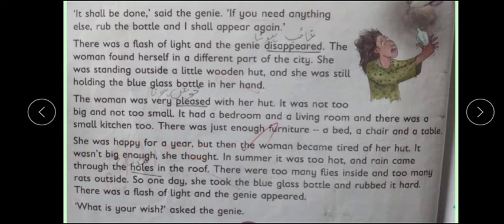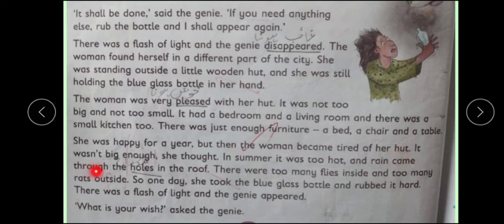She was happy for a year — aek sal bhoot kush rehi. But then the woman became tired of her hut — pher woh thuk gai. It wasn't big enough, she thought — ye toh chota hai, itna bada nahi hai. In summer it was too hot, and rain came through the holes in the roof — barish andar a jati hai chat mein se. There were too many flies inside and too many rats outside.